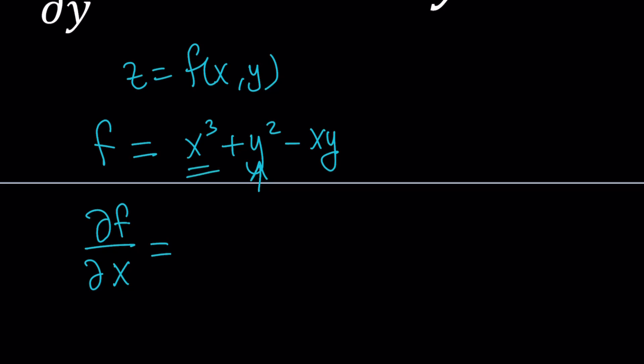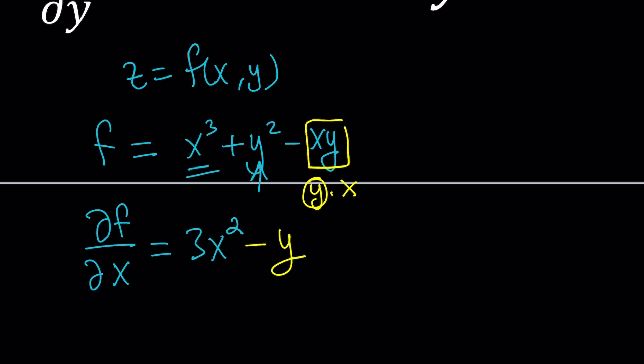The derivative of x cubed with respect to x is going to be 3x squared. And here, you don't need to use the product rule. Since y is a constant, this is kind of like y times x — think about it as 3 times x, the derivative would just be 3, the constant. So in this case, that's going to be minus y.